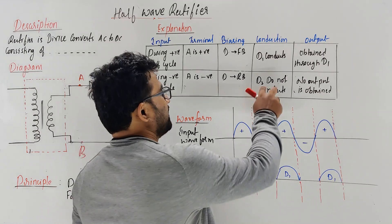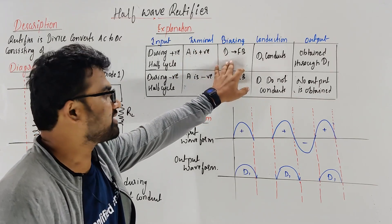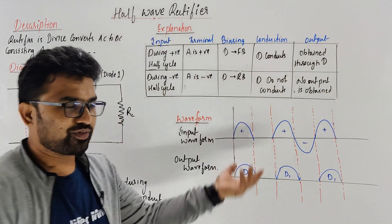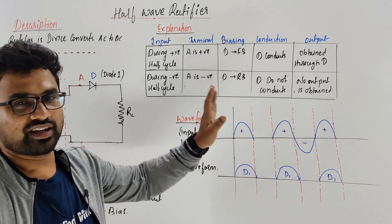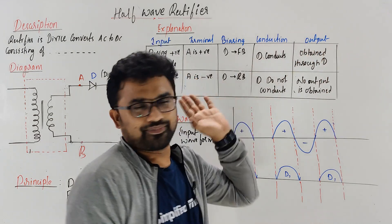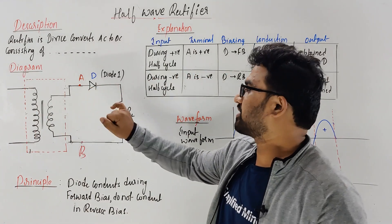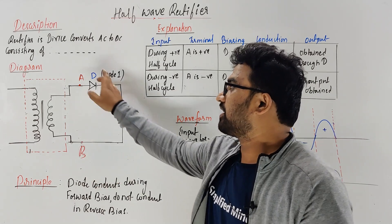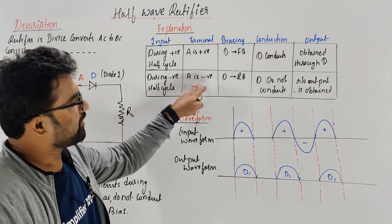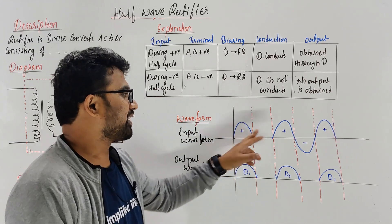During the positive half cycle, A is positive, diode D becomes forward biased, therefore D conducts, and output is obtained through D. During the negative half cycle, the polarity changes — A becomes negative, the diode becomes reverse biased, and D does not conduct. So during the negative half cycle, A is negative, the diode is reverse biased, it does not conduct, and no output is obtained.